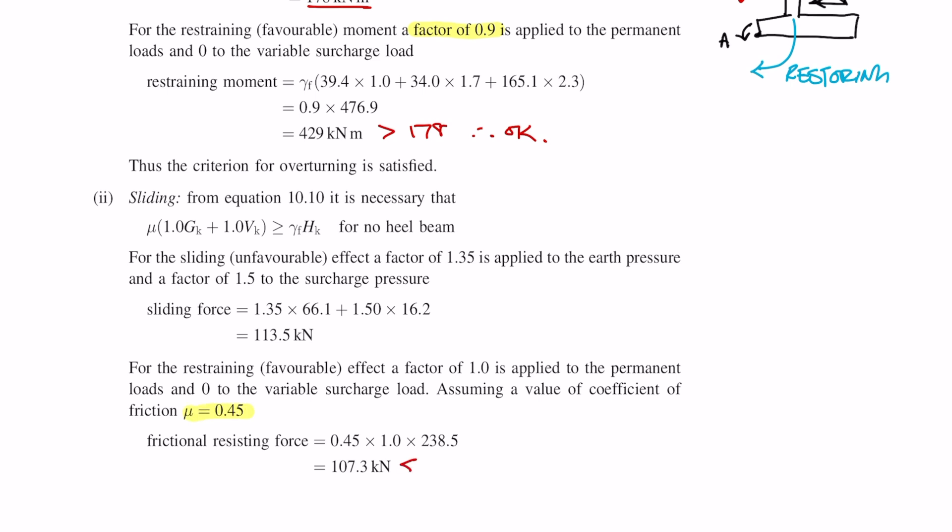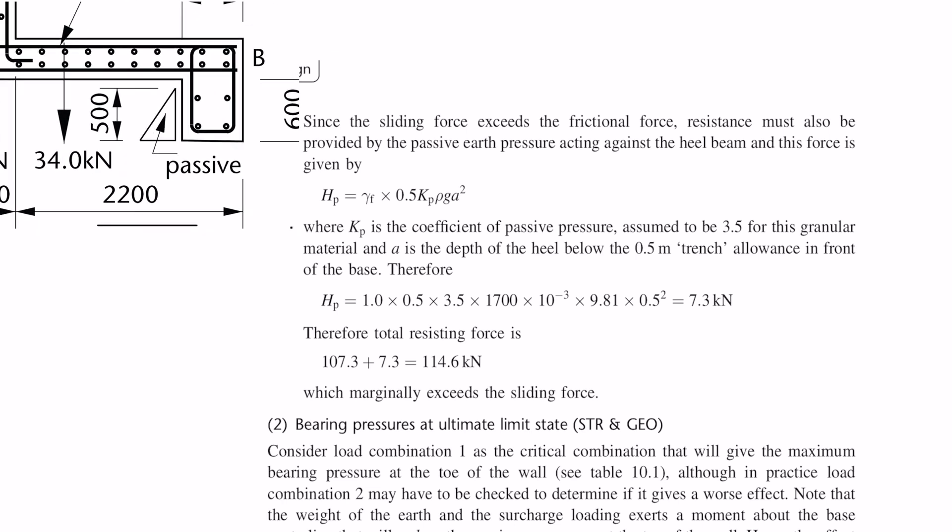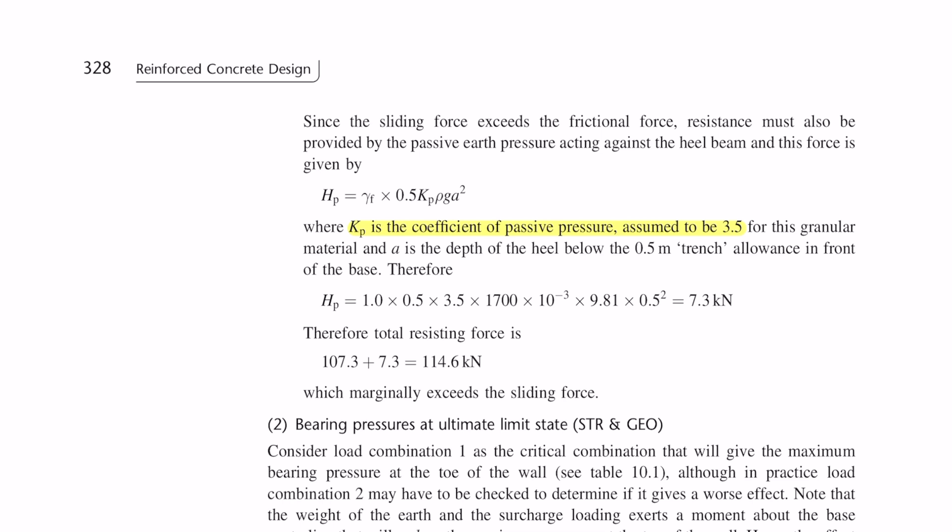Therefore we need to use the heel beam and the passive pressure to increase the frictional resisting force. Using a heel beam is generally not very economical but for the sake of this design example we'll go through it. The additional frictional force is very easy to calculate. All you really need is the coefficient of passive pressure, in this case 3.5 for granular material. Just like you worked out the horizontal force for the earth pressure, you do exactly the same calculation except substituting in a different h value and the passive pressure coefficient. Add the two forces together and you'll see it marginally exceeds the sliding force, therefore the design passes.